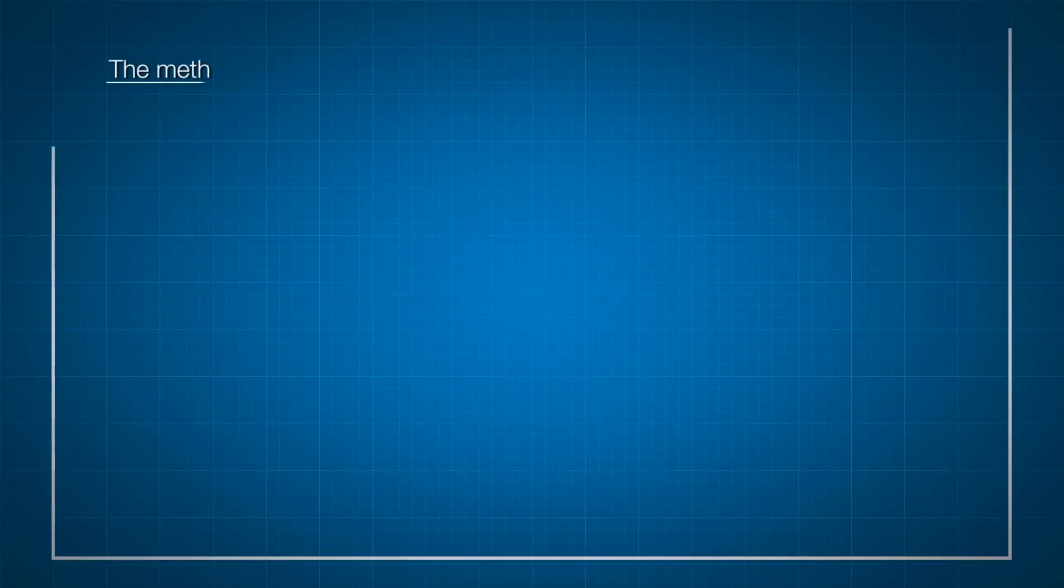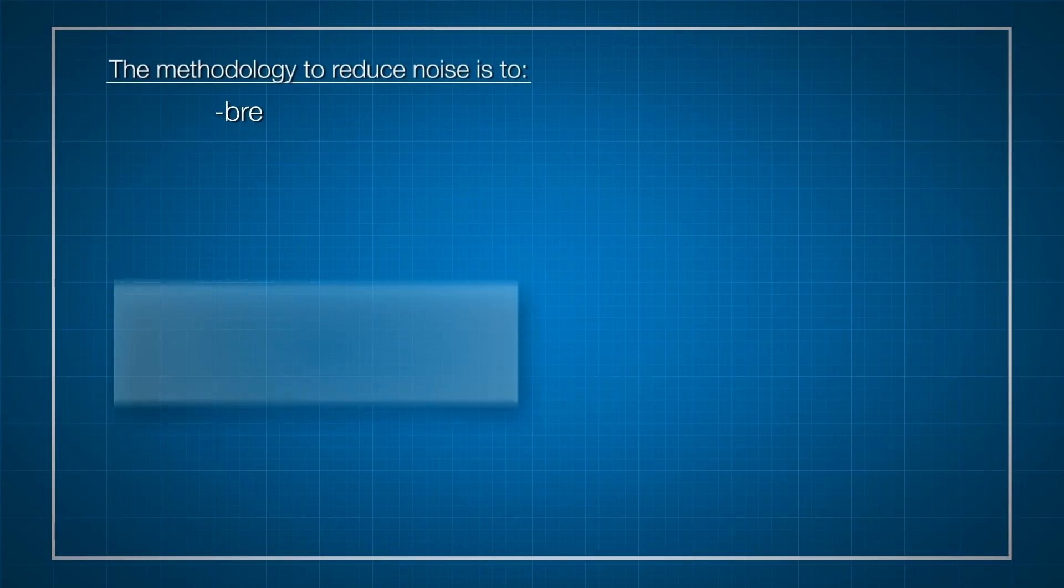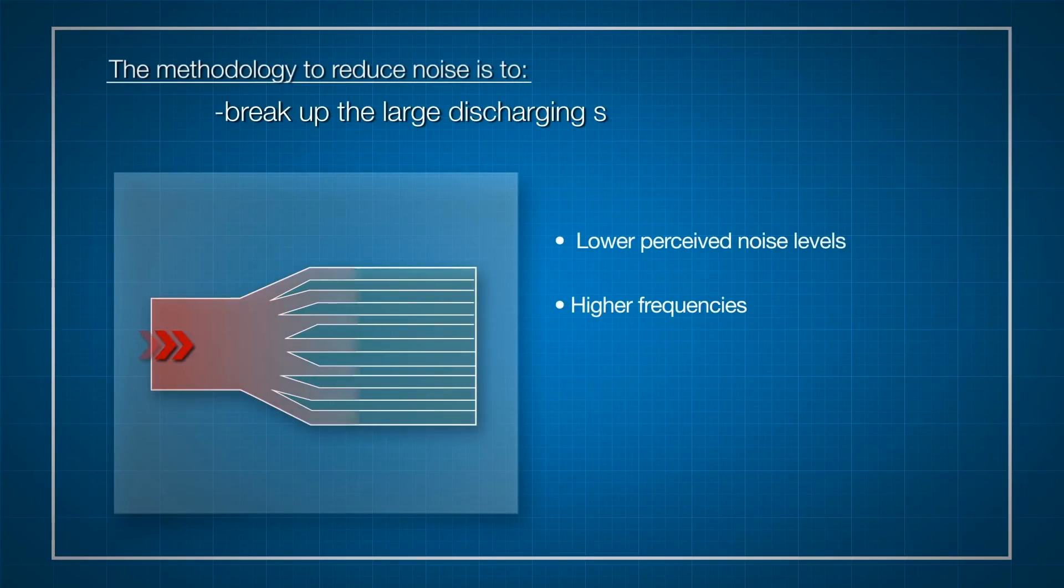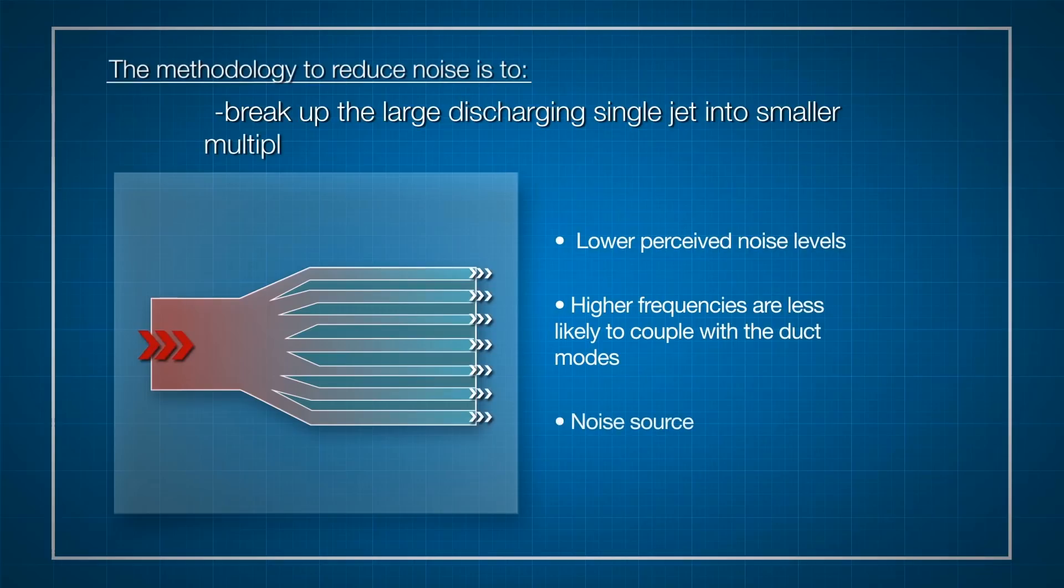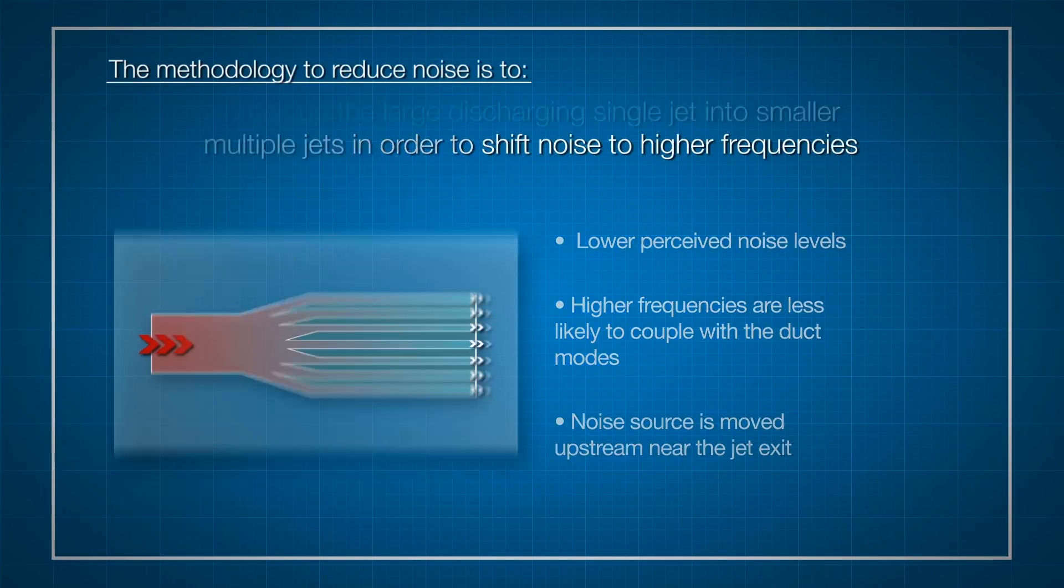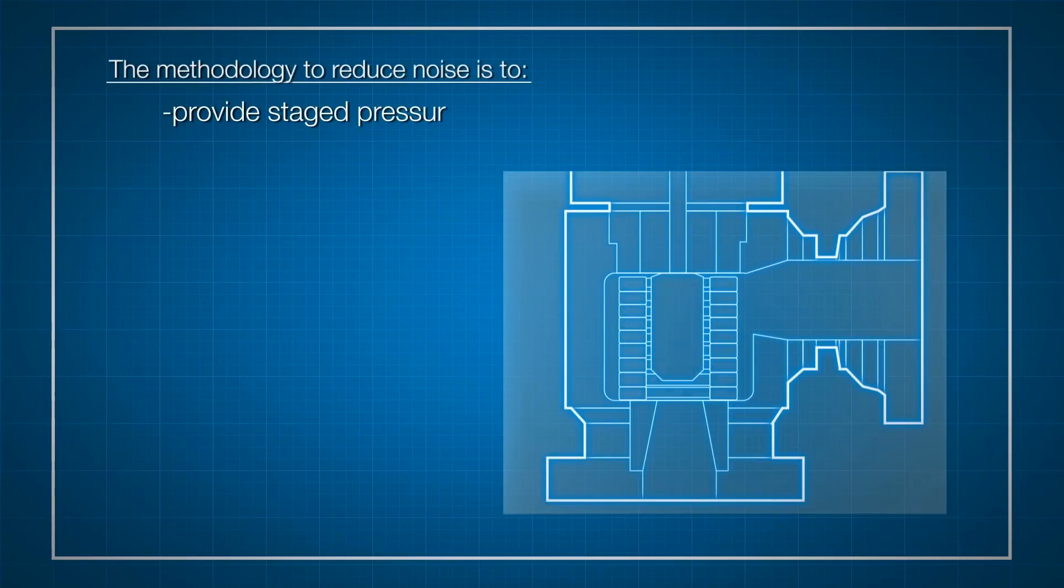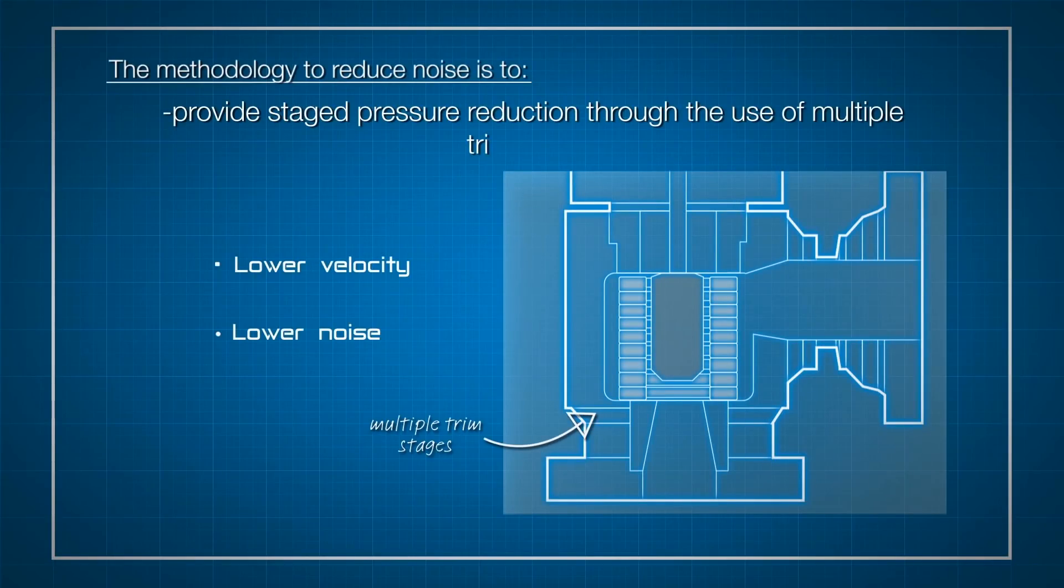The methodology to reduce noise is to break up the large discharging single jet into smaller multiple jets in order to shift noise to higher frequencies, and provide staged pressure reduction through the use of multiple trim stages.